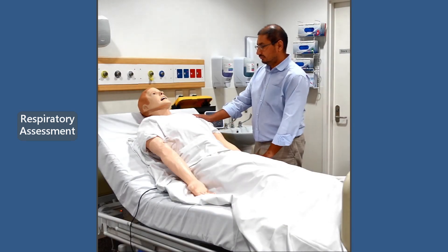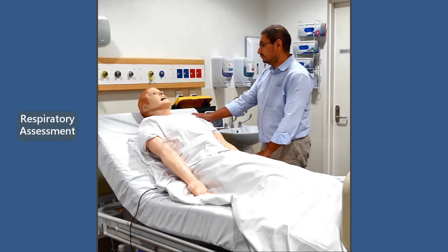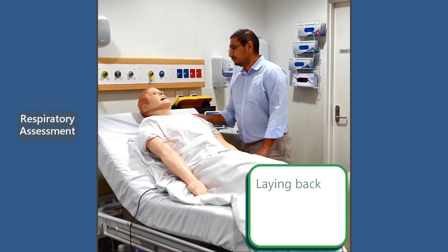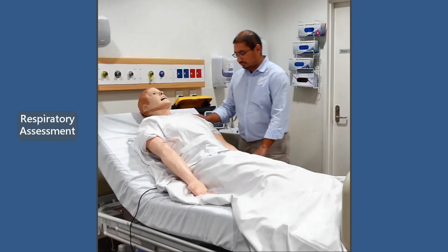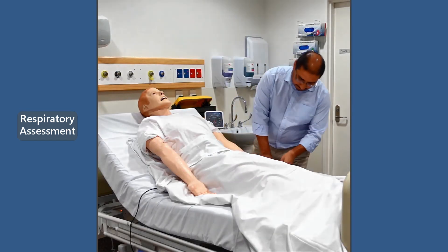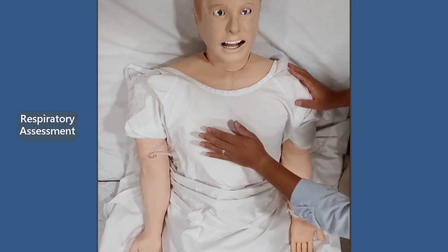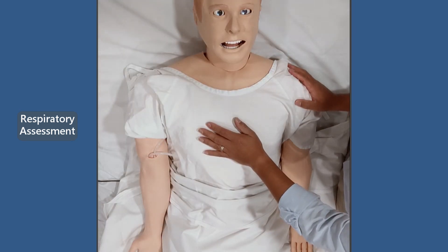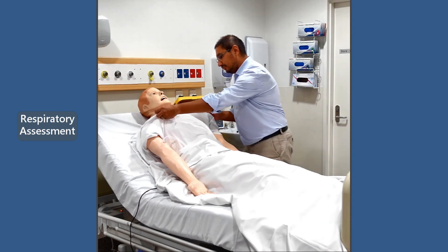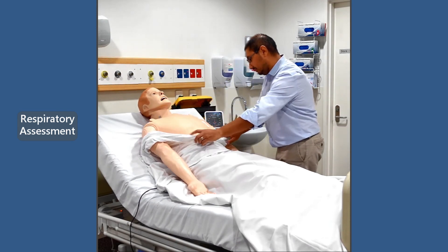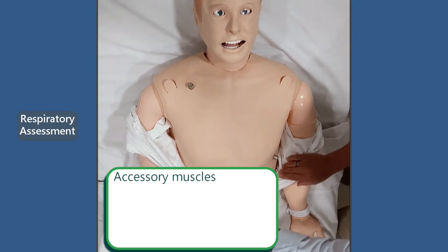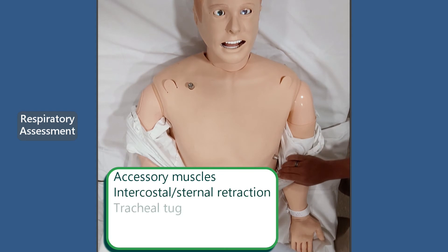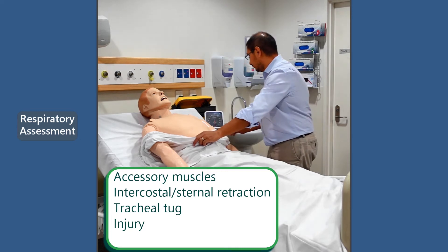Commence your respiratory assessment by looking at the patient's general appearance and their position. Are they laying back? Are they sitting up? Are they in a tripod position? Note the patient's level of consciousness. Is there any evidence of peripheral or central cyanosis? Count their respiratory rate for a full minute. Appropriately expose your patient. Assess for any increase in work of breathing, such as use of accessory muscles, intercostal or sternal retraction, tracheal tug, or any evidence of injury. In infants, you might also note head bobbing.